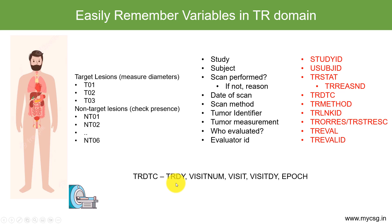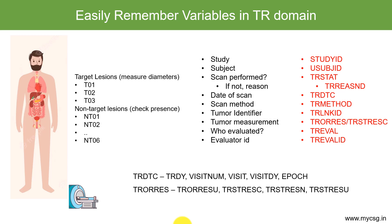Since we are storing results, they need to be associated with a test. Whenever we have a result we also need to know the unit — for example, when measuring diameters we need to know whether it is in millimeters or centimeters. That unit is stored in the TRORESU variable. The standardized result in character format is stored in TRSTRESC, the standard result in numeric format in TRSTRESN, and the standard result unit in TRSTRESN.